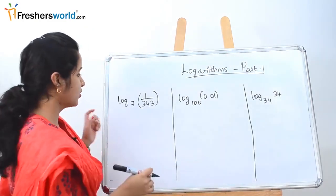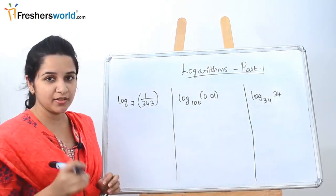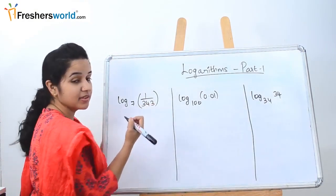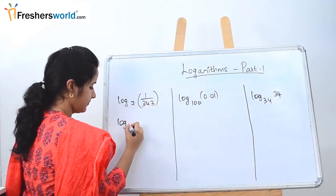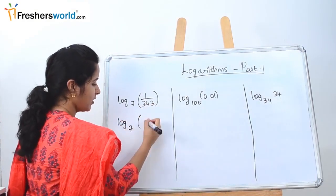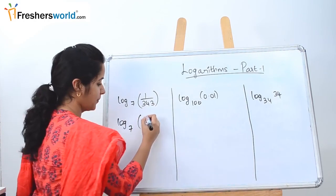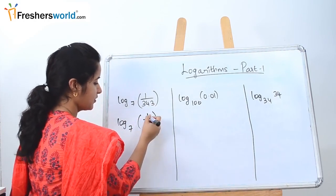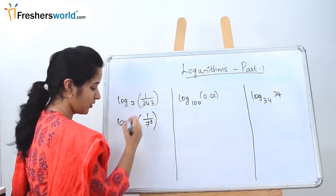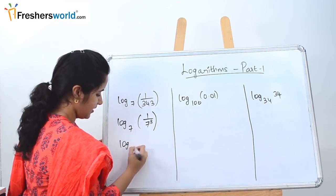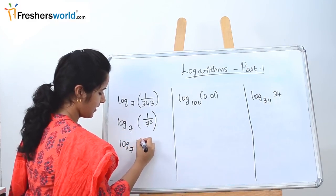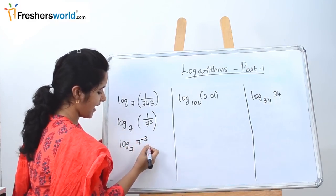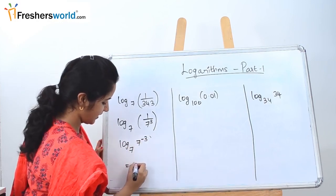The first problem is log(1/343) to the base 7. How can 1/343 be written? 343 is nothing but 7 to the power 3, so 1/343 is 1 by 7 cube. This can be taken to the top as 7 power minus 3. Both of these are the same, so the value of x is nothing but minus 3.